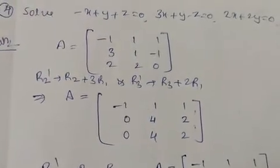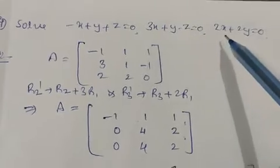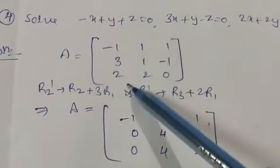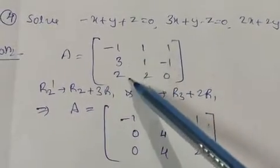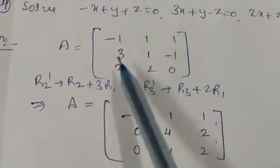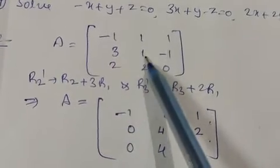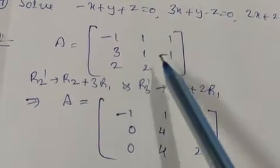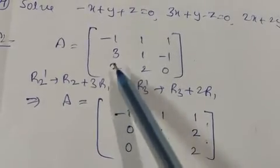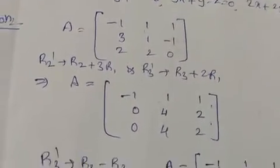Our last example: solve minus x plus y plus z equals 0; 3x plus y minus z equals 0; 2x plus 2y equals 0. Write in matrix form. Apply R2 → R2 plus 3R1 and R3 → R3 plus 2R1. Second row becomes [0, 4, 2] and third row becomes [0, 4, 2].